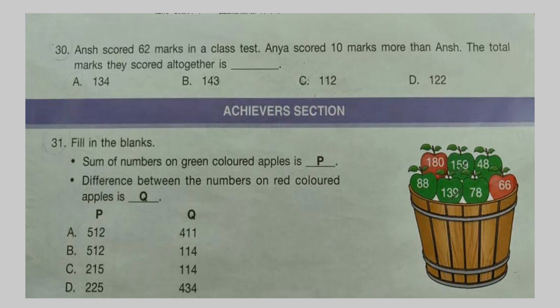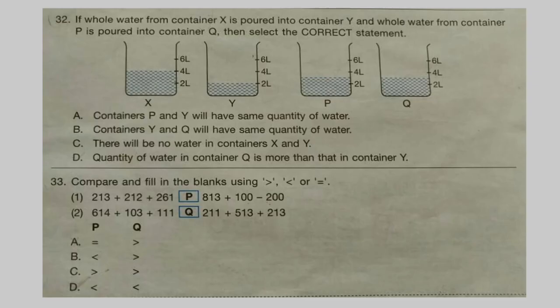Question 31: Fill in the blanks. Sum of numbers on green colored apples is P. Question 32: Difference between the numbers on red colored apples is Q. If whole water from container X is poured into container Y and whole water from container P is poured into container Q, then select the correct statement.